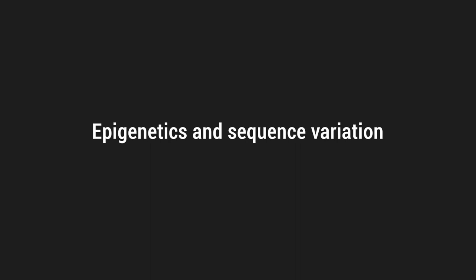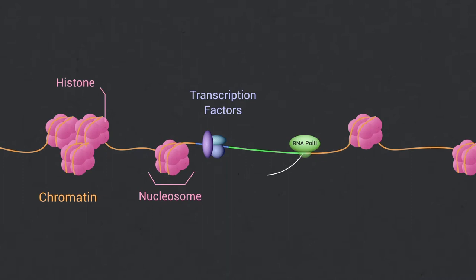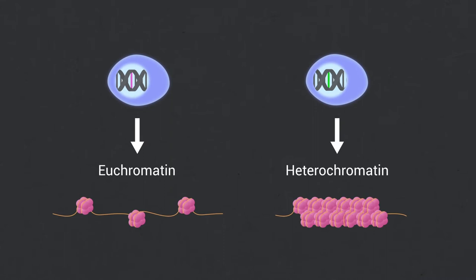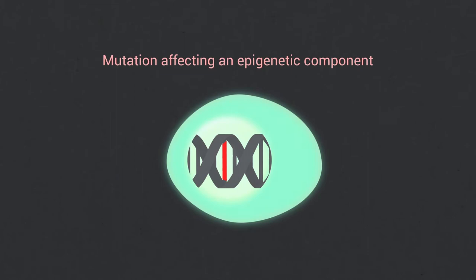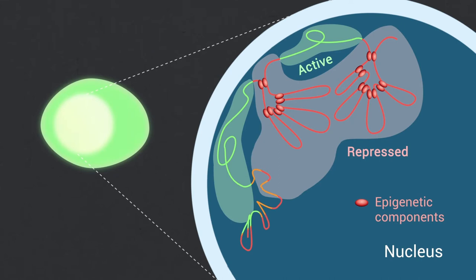DNA sequence variation and epigenetics are inextricably linked. On the one hand, chromatin states influence transcription factor binding, and the precise relationship between histone modifications and transcription factor binding is protein family-specific. On the other, DNA sequence polymorphism clearly influences chromatin states. Furthermore, DNA mutations that affect epigenetic components can perturb cellular states, and chromatin and epigenetic components regulate genome stability and mutability — their disruption can have important consequences on gene expression and genome integrity.